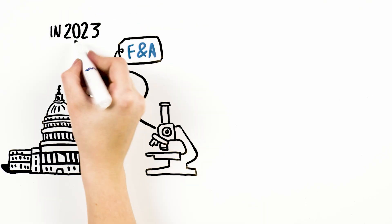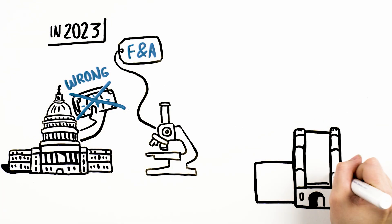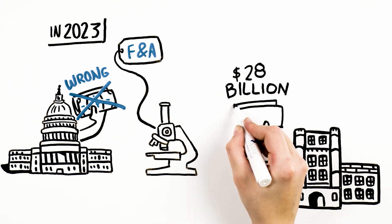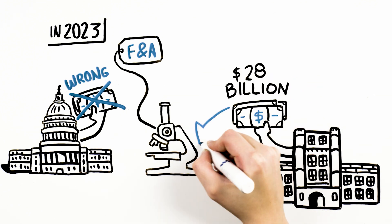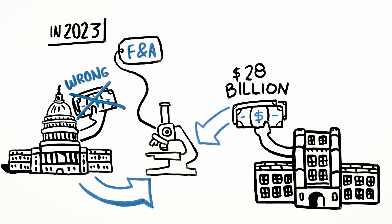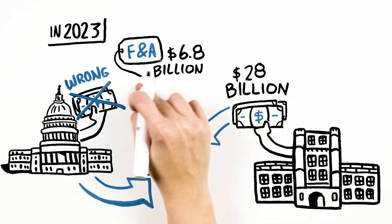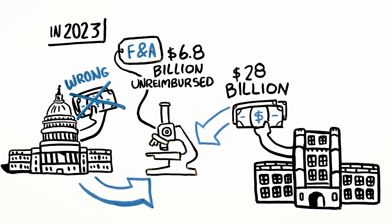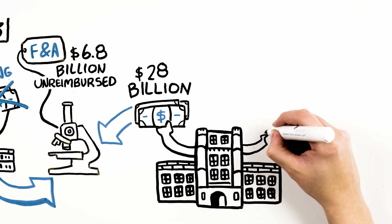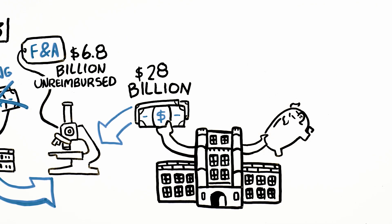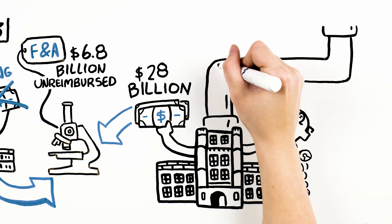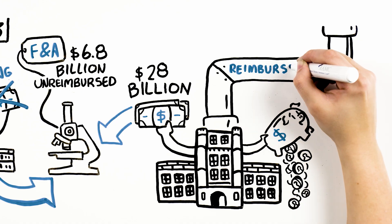Federal data shows that in fiscal year 2023, universities contributed approximately $28 billion of their own institutional funds to support research. This included over $6.8 billion for the federal government's share of F and A costs that it did not reimburse. This means that universities are subsidizing federal research. Universities are making up the difference between the full costs of conducting federal research and what the government pays.